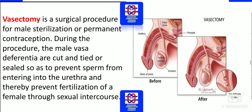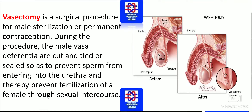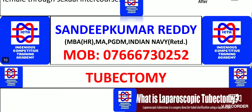Now we should remember vasectomy. Vasectomy is a surgical procedure for male sterilization or permanent contraception. During the procedure, the male vasa deferentia are cut and tied or sealed so as to prevent sperm from entering the urethra, thereby preventing fertilization through sexual intercourse. As you can see in the figure, how exactly the scrotum and testicles are involved — the vas deferens is divided and a knot is made in it. This type of vasectomy is done in males.